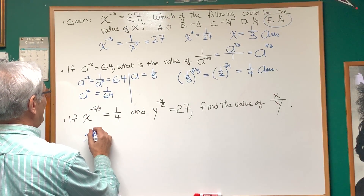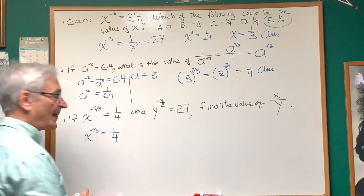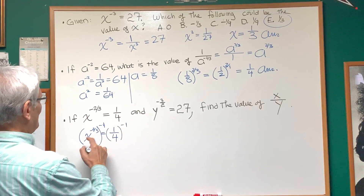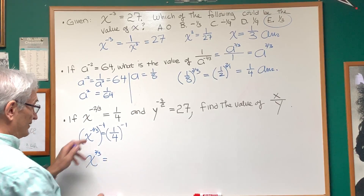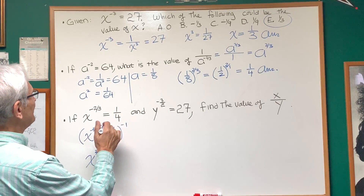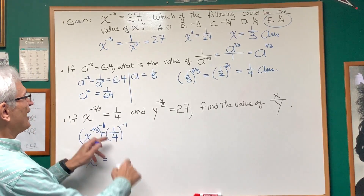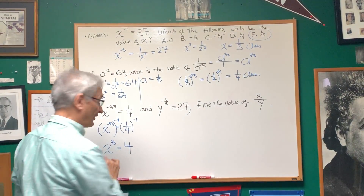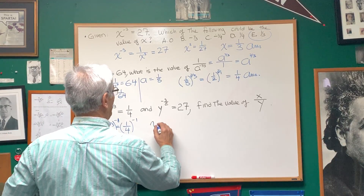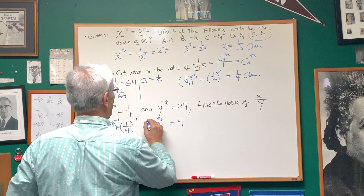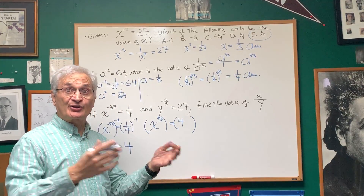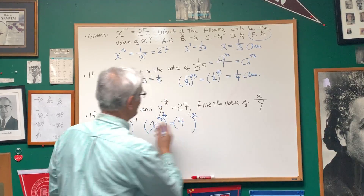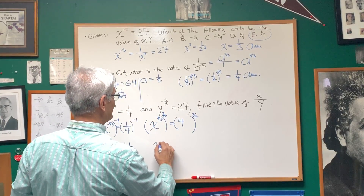X to the minus two thirds is equal to one fourth. What if we take both sides of this expression to the negative one power? That gives us X to the two thirds — if we exponentiate, we multiply the exponents: negative two thirds times negative one is two thirds. One fourth to the negative one power means take the reciprocal, so this simply means four. Now I have X to the two thirds equals four.